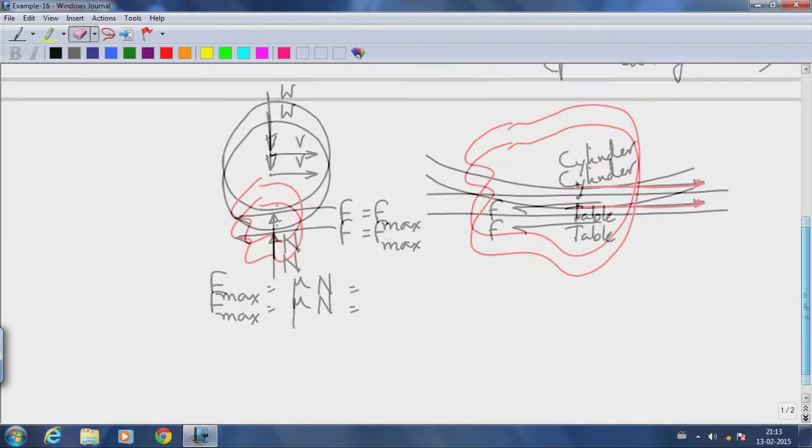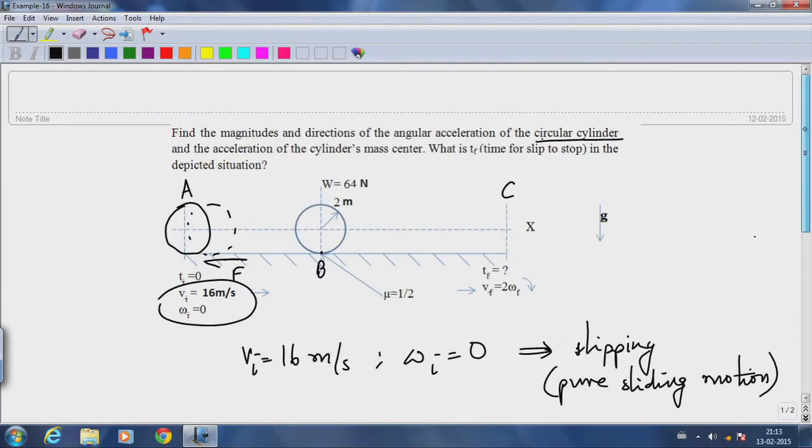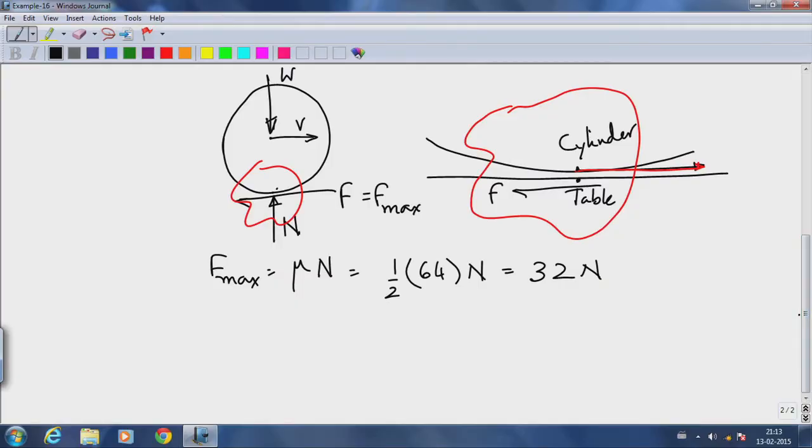Mu we are told is 1/2 and N would simply equal W. The weight is 64 newtons, so the maximum possible friction force is 32 newtons. The force that acts at this point of contact will be equal to 32 newtons because the hoop as a whole is slipping at time instant zero.